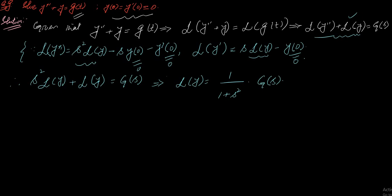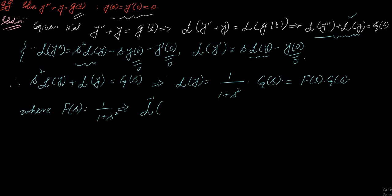Here you can see this is a product of two functions: F(s) times G(s), where F(s) equals 1 over (1 plus s squared). The inverse Laplace of F(s) — using a formula you have studied — gives us f(t).